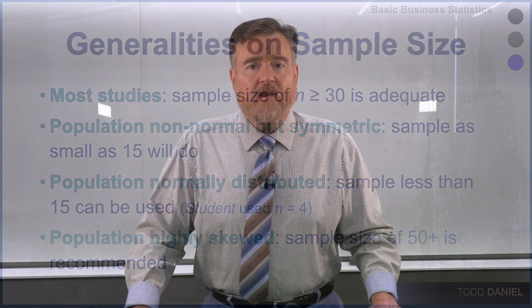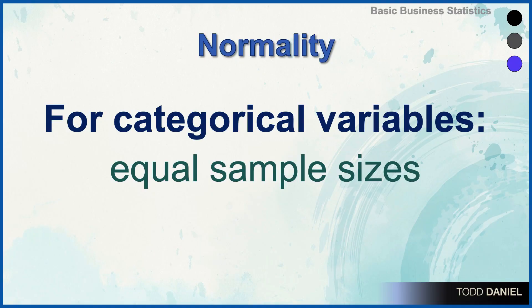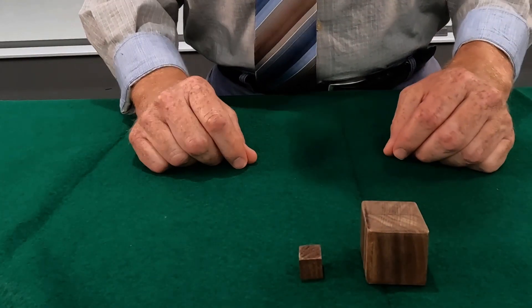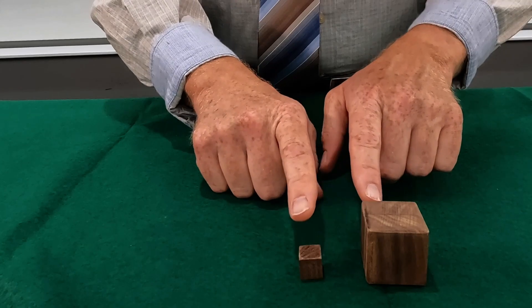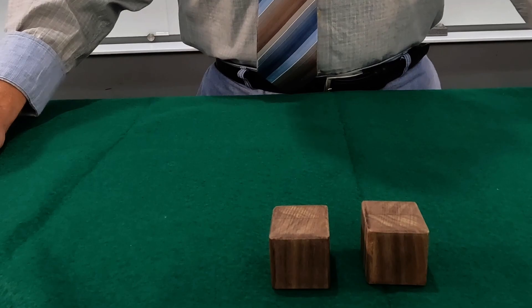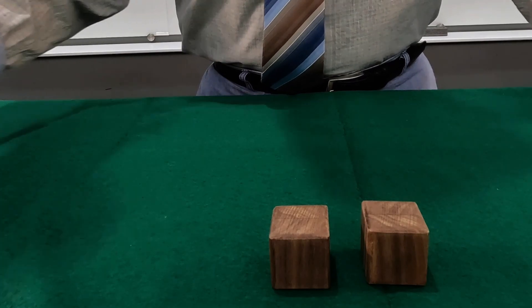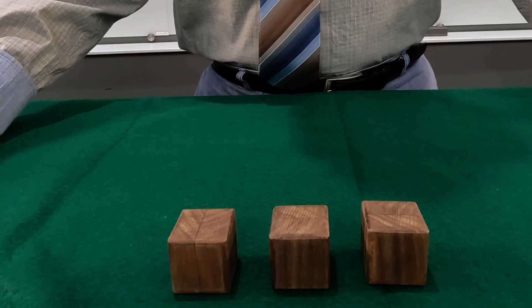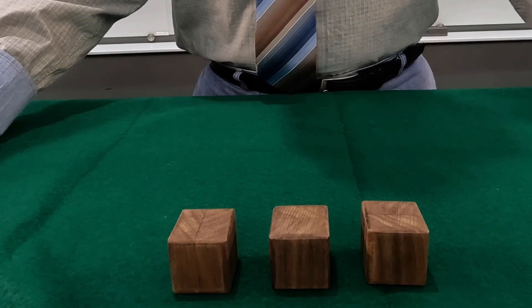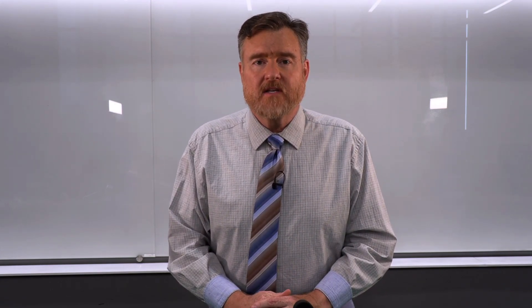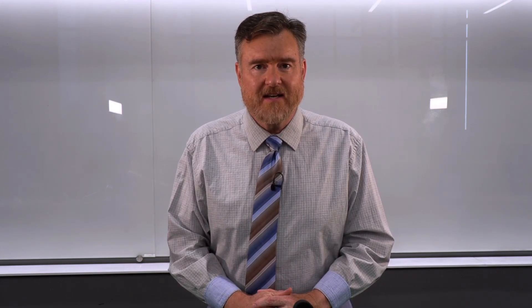And finally, for categorical data, the assumption of normality is met as long as the sample sizes are equal. If you have unequal sample sizes, then you cannot easily make comparisons. You should have equal sample sizes to meet the assumption of normality. If you are using three or more groups, each group should have an equal sample size. And now you truly understand the meaning of the assumption of normality in statistics.